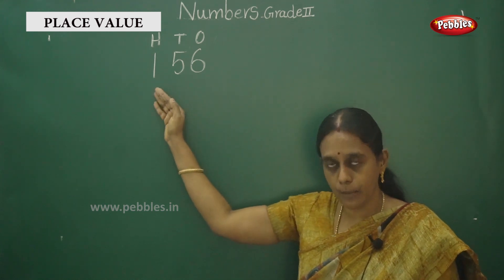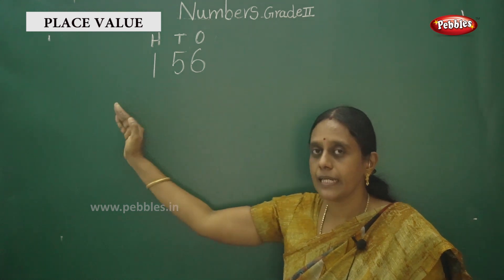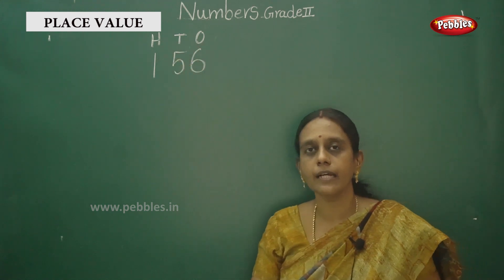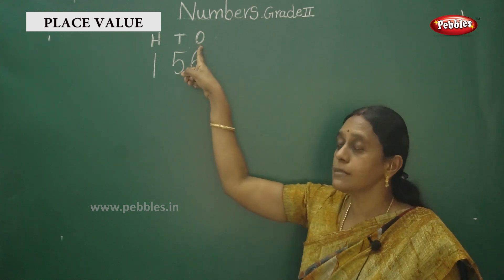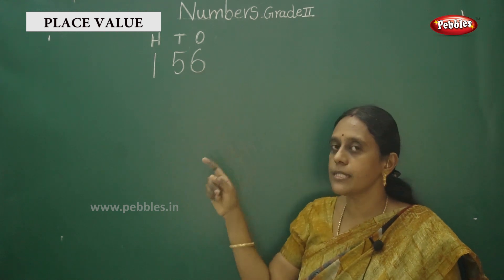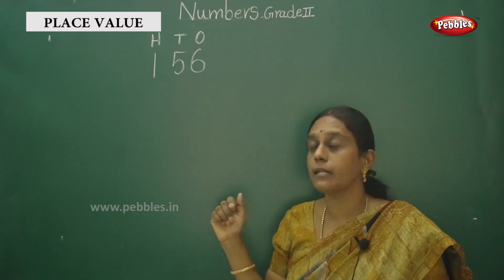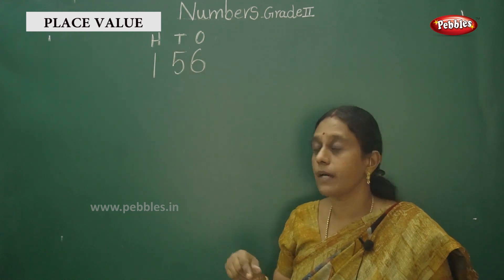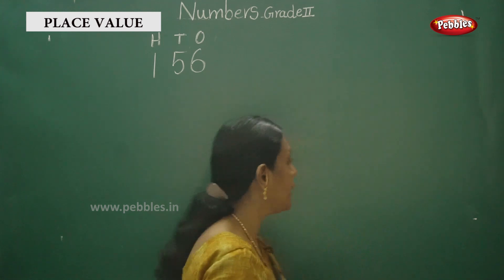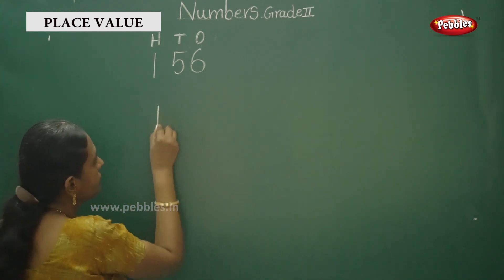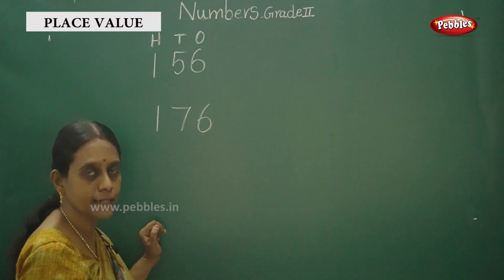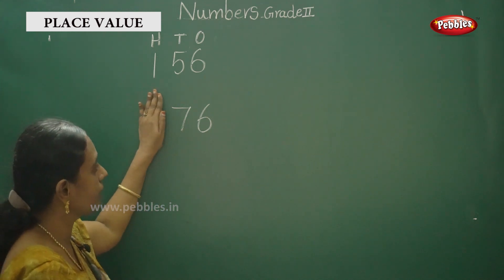Ones, tens, hundreds place — you have to understand what is meant by O, T, and H. O mentions Ones, T mentions Tens, and H mentions the Hundreds place. Ones, tens, hundreds — this is the place. You can write one number in the hundreds place.